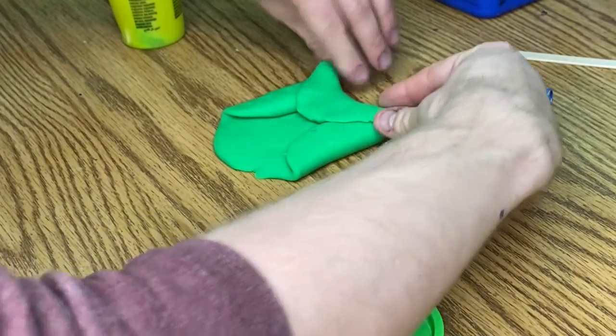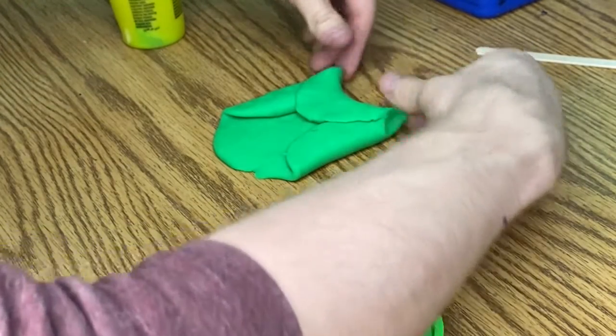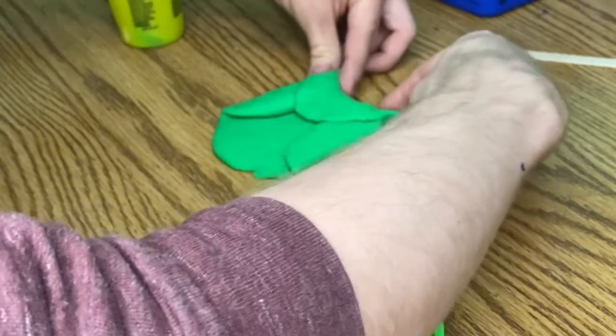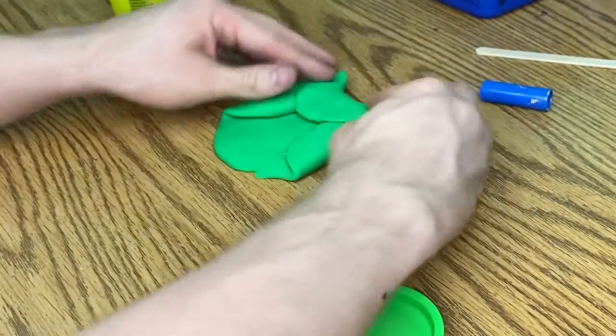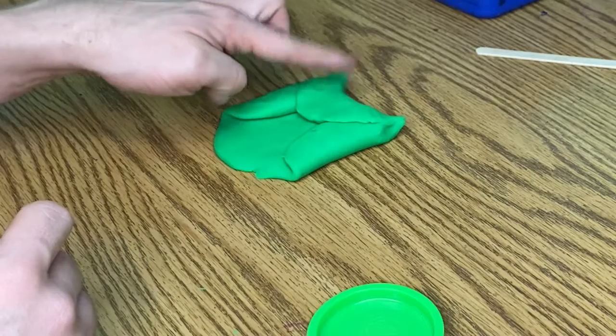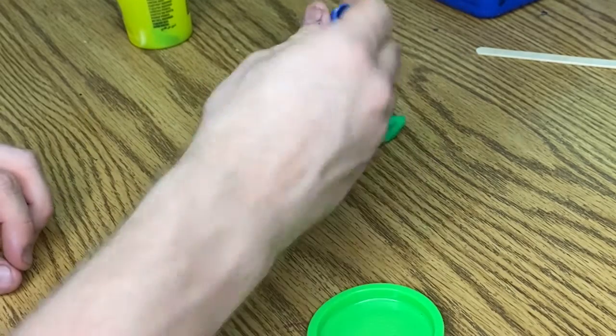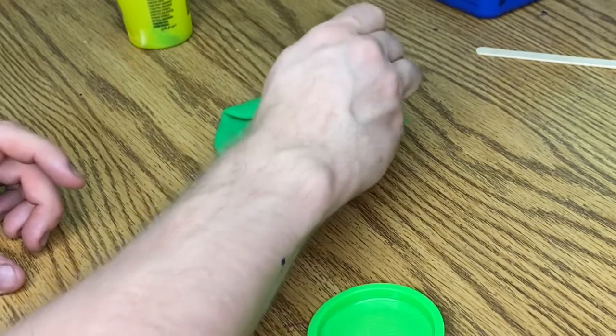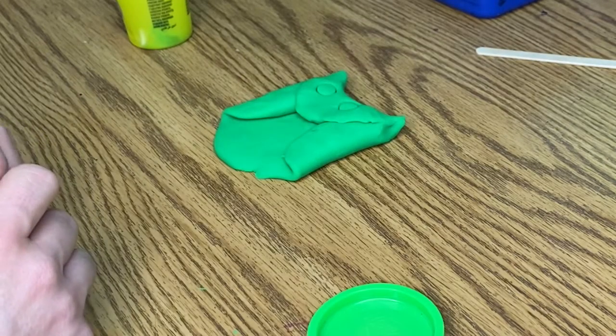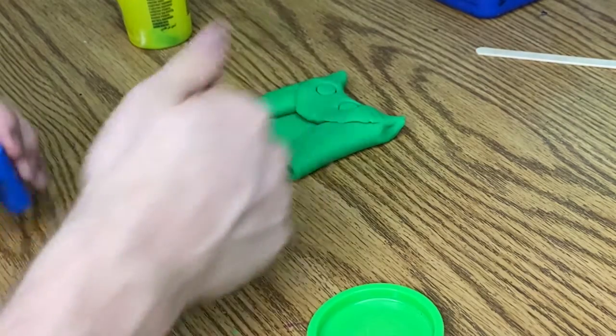Now, owls actually have little feathery ears. So you can kind of pinch the ears. Make them a little bit pointier. After you've given it some ears, give us a thumbs up. Now I want you to take your marker cap, and I want you to do two big eyes. And then give us a thumbs up.